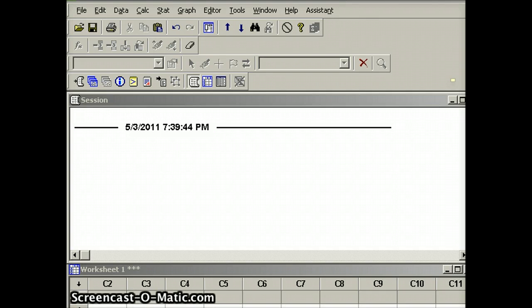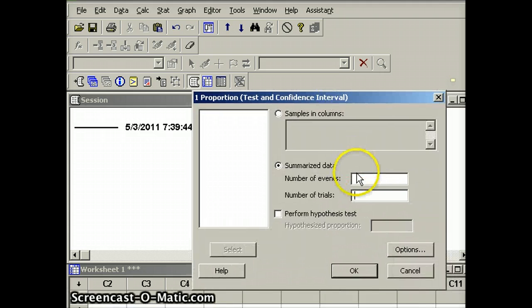And then we're going to pull that over and you'll notice we have the number of events and the number of trials. Events is the number of winners; in our case we had 57 winners and the number of trials is 200. 57 winners out of 200 trials. Next I'm going to go to options.